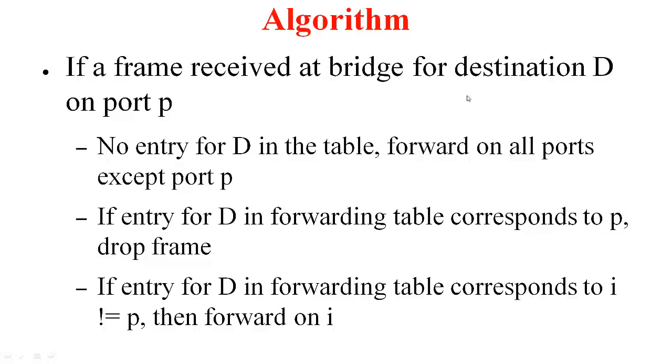So, here is the algorithm. If a frame is received at a bridge for destination D on port P, this is what you do. If there is no entry for D in your forwarding table, you forward it on all ports except the port on which it was received, which is port P. Now, suppose if this forwarding table was looked at and it says that this D is on port P and this was the same port on which this particular frame was received, then you do not have to do anything. You have to drop the frame. This corresponds to the case earlier where host A sent to host B and this was received on port 0 of the bridge and it knows that B is on the same port. So, it does not have to do anything. It just drops the frame.